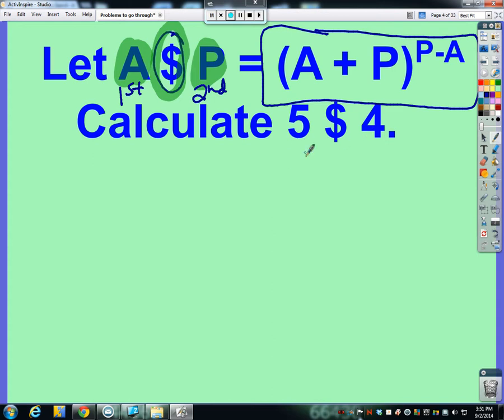So in this case if I wanted 5 dollar sign 4, well that means A is really like my 5, it's the first number, and the 4 is the second number, so it's basically the P. So then I go up here, so I have A, which is 5, plus P, which in this case is 4,